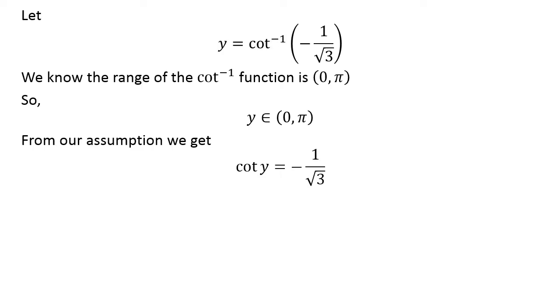Applying properties of inverse functions, we can rewrite y = cot^(-1)(-1/√3) as cot(y) = -1/√3.